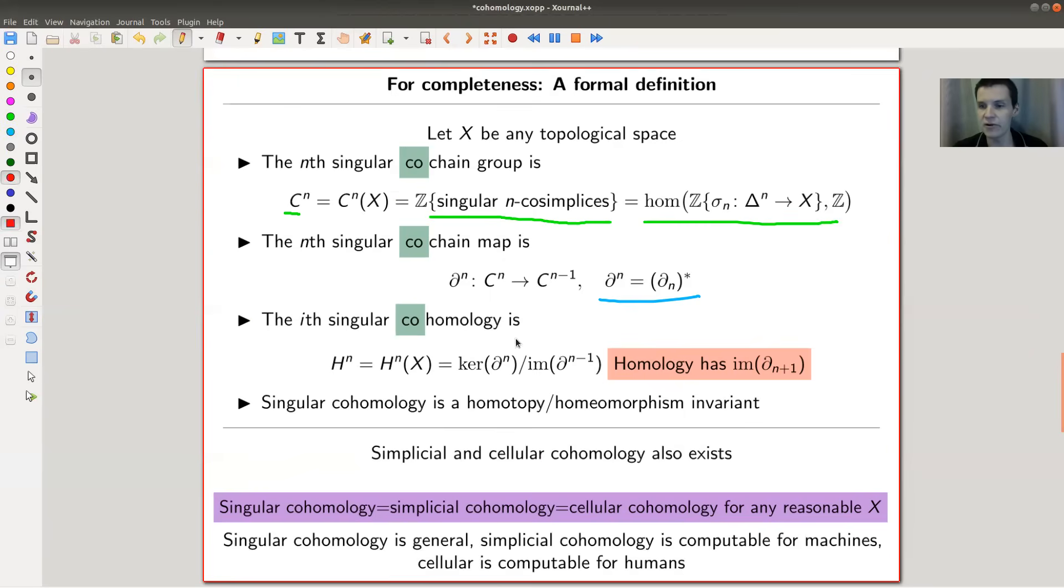And since all arrows turn around, this is always very confusing. You still take the same kernel and image construction, but now the arrows have turned around. So instead of taking kernel of the boundary map, the coboundary map, modulo image of the coboundary map plus one, you take the minus one because all arrows reverse. Anyway, this would be the definition that you usually find for cohomology, really using this idea that a column vector and a row vector are related by vector space duality.